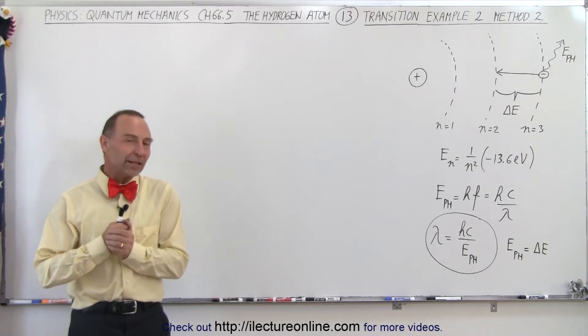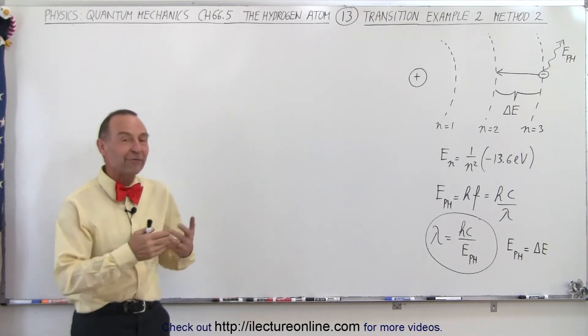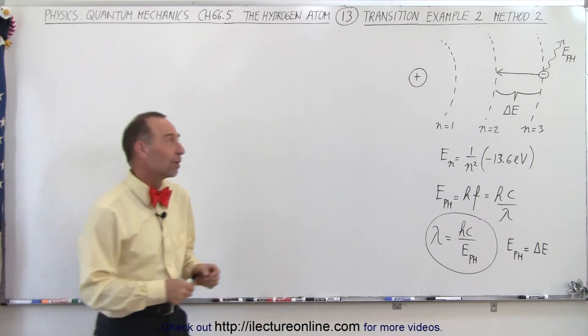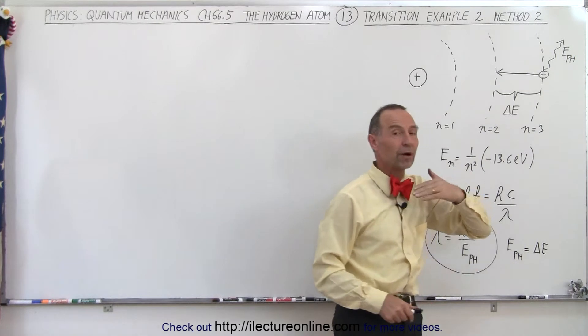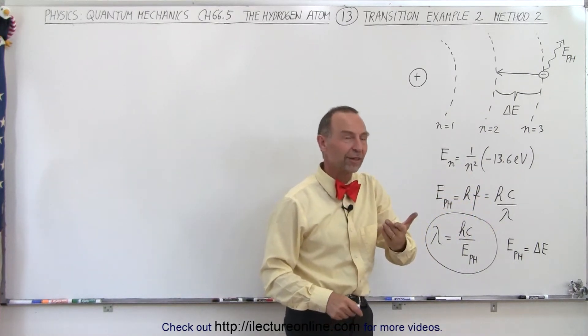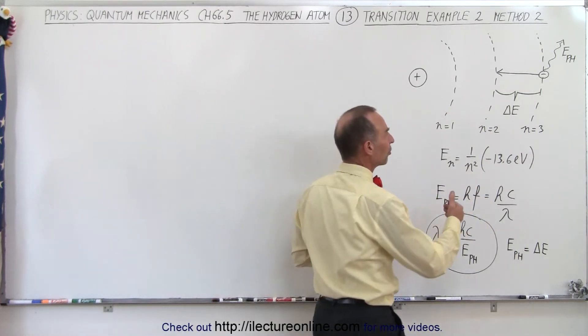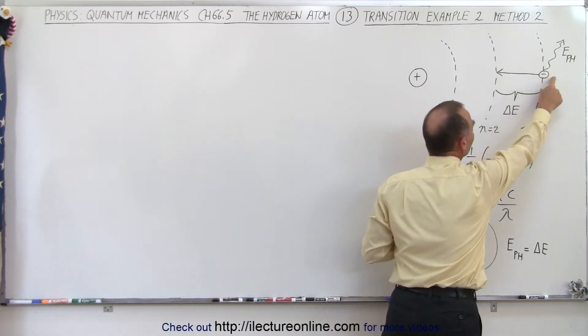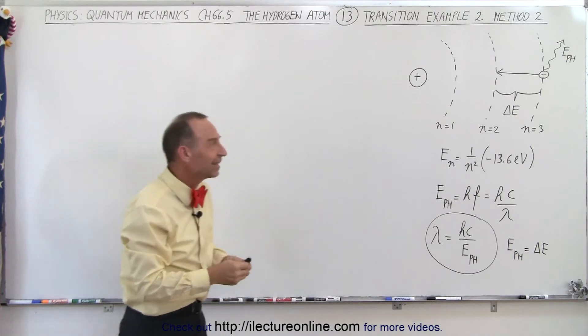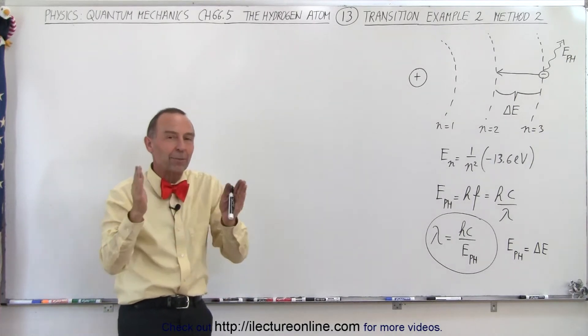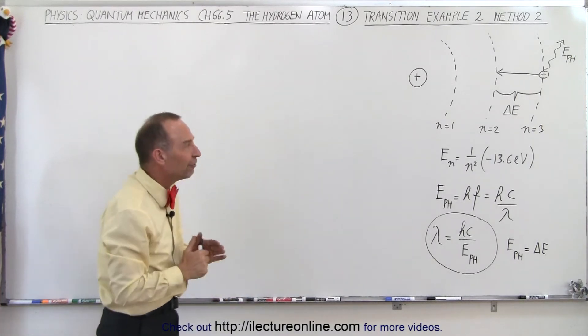Welcome to ElectronLine. Now let's do an example of a very familiar transition, the transition from n equals 3 down to n equals 2, which is part of what we call the Balmer series. That particular transition for an electron in the hydrogen atom will release a photon that has a frequency or wavelength that puts it right in the area of visible light.